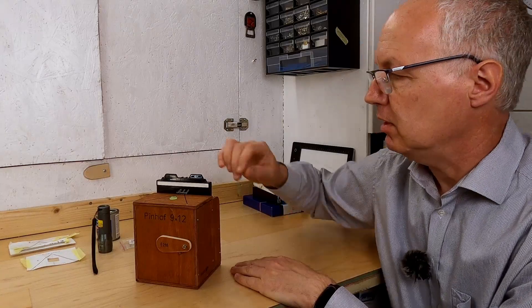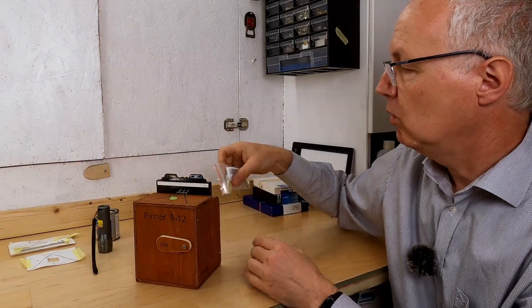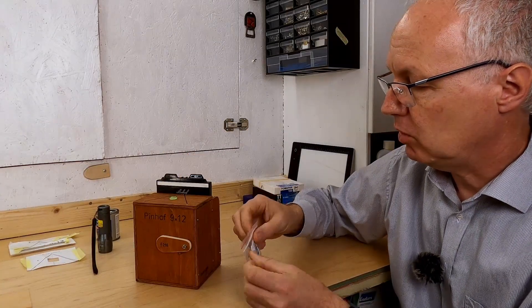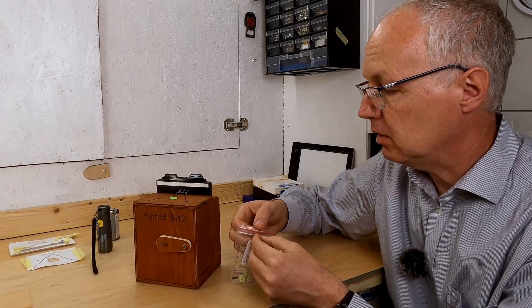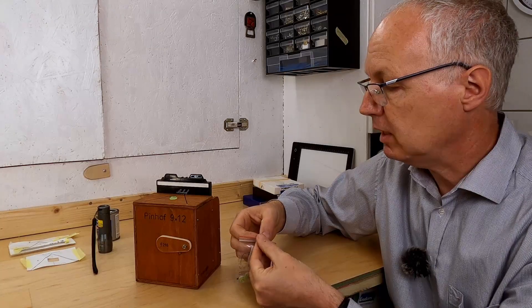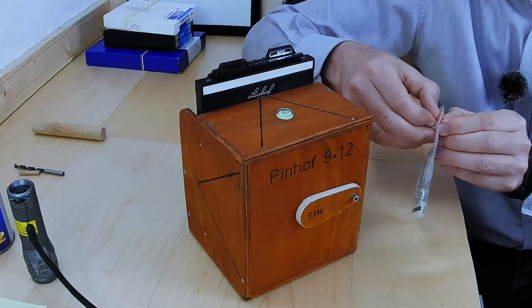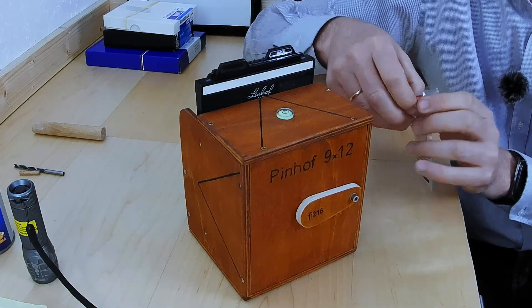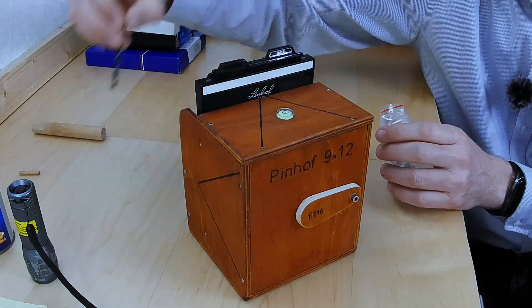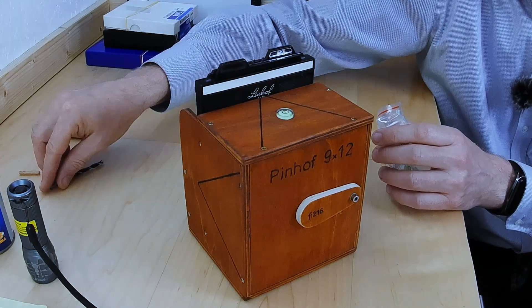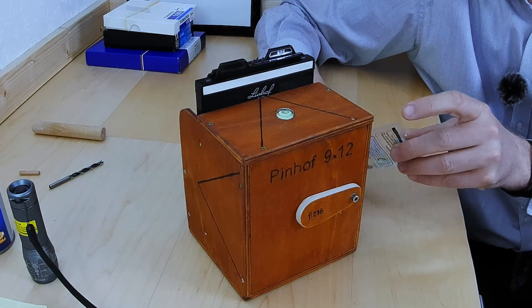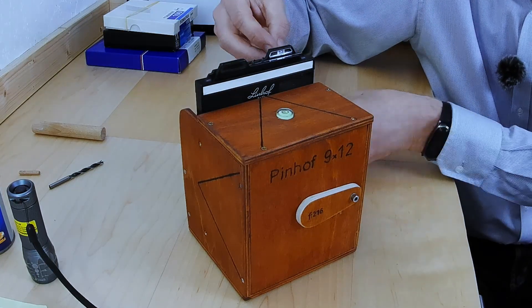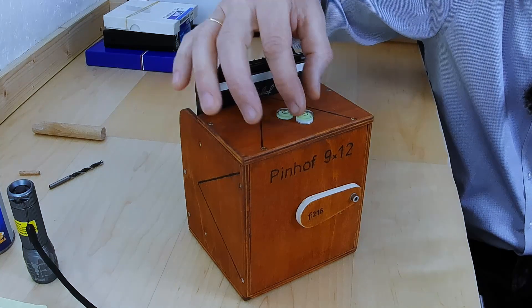The second improvement is to add a leveler. So the leveler is one of these small round ones which you can buy in round or in rectangular shape. So I decided for round. Because this round, I just took a bigger drill like this one, put in some glue and glued in this leveler.